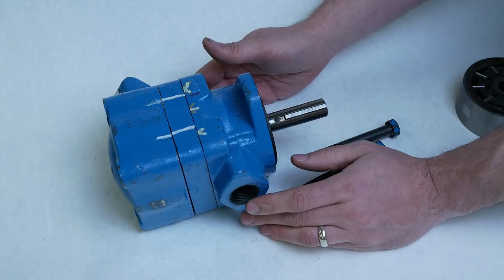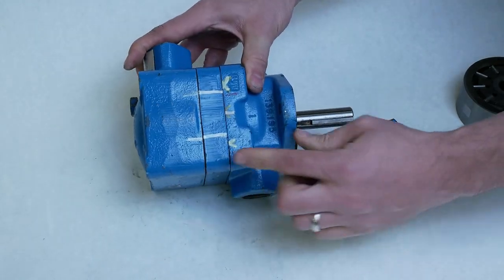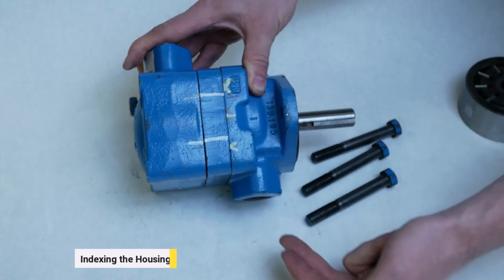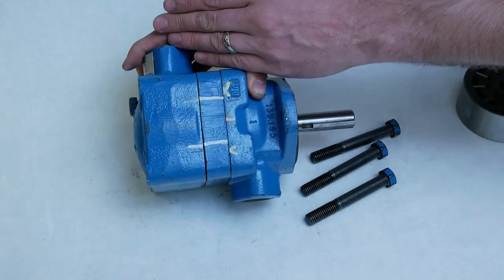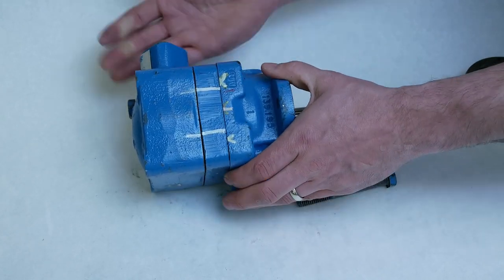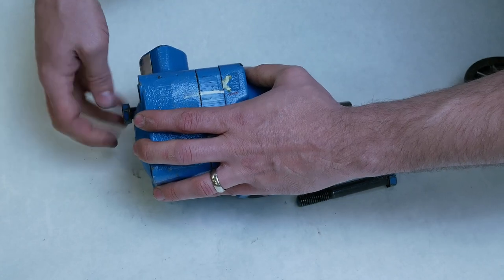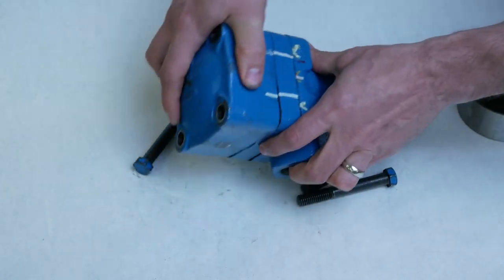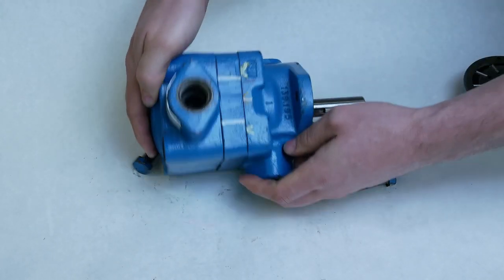So as we talk about the vane motor being indexable this is what we're talking about. We can actually reassemble the unit properly and use it with the A and the B port instead of lined up on the same plane they can actually be 180 degrees from each other. They would actually be able to be indexed 90 degrees by simply changing pulling the hardware out and rotating the end housing just like that.